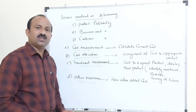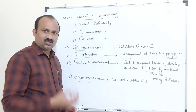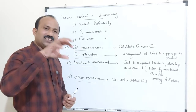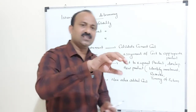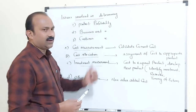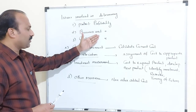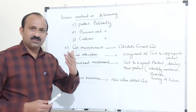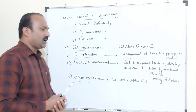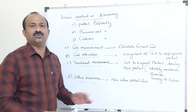Other measures also need to be taken: if any non-value-added cost or non-value items are included, you have to remove them. You have to check for efficiencies — if any inefficiency scenario exists, you can remove it. To perform analysis related to product profitability, business unit profitability, and customer profitability, you must check cost measurement, allocation criteria, investment measurement, and other measures.